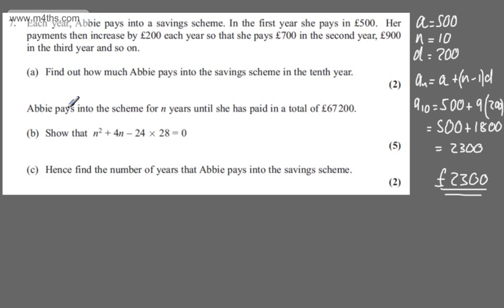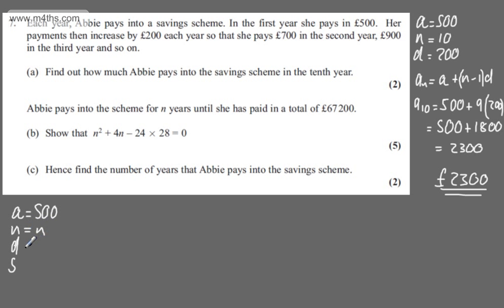We're now told Abby pays into the scheme for N years until she's paid in a total of £67,200. In part B for five marks, we need to show that N squared plus 4N minus 24 times 28 is equal to 0. Again collecting the information A, N, D, and S: A is £500, N is N, D is £200, and the sum of the first N terms is £67,200.